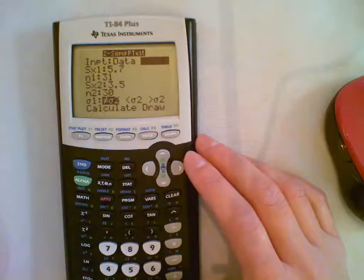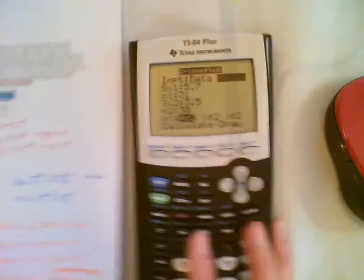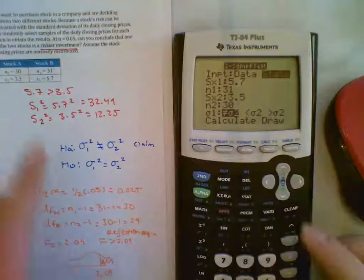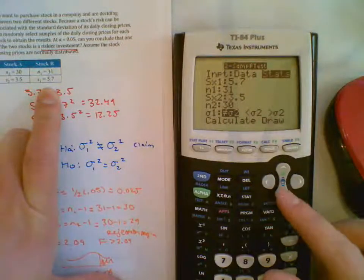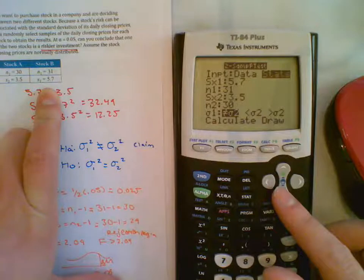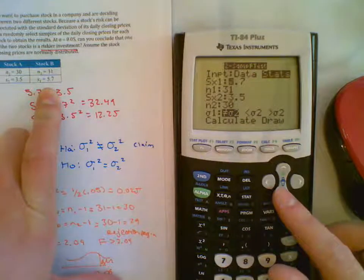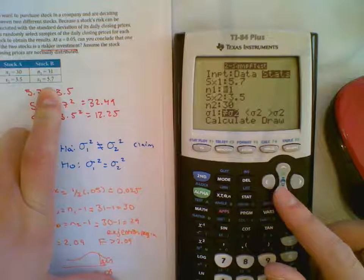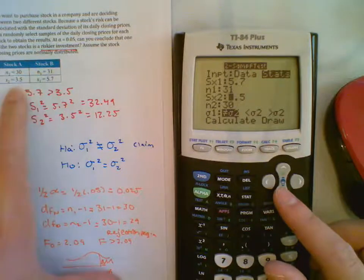So you're going to go ahead and click enter, and from there I'm going to go ahead and use the data from the last example that we did from the 10.3 notes. So my standard deviation from my first sample was 5.7, my first sample total values was 31.